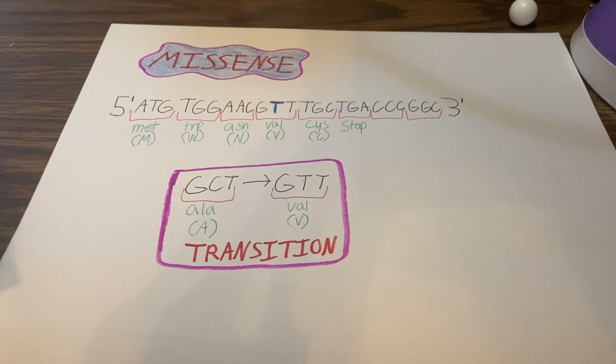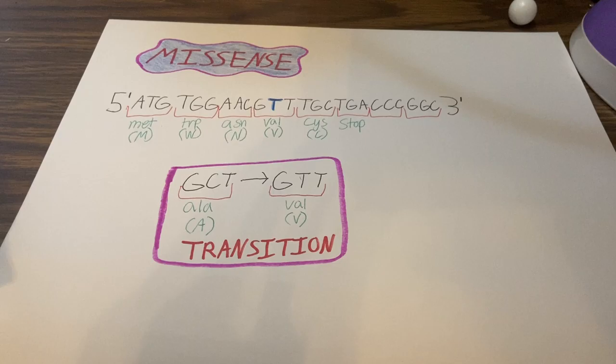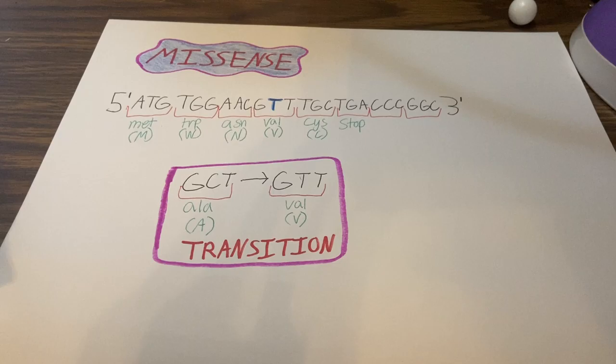The last mutation we're looking at is the missense or non-synonymous mutation. This is when an amino acid is changed and it could alter the protein function or make the protein non-functional. So in our mutation, the base cytosine goes through a transition into the base thymine, changing the amino acid alanine into the amino acid valine.